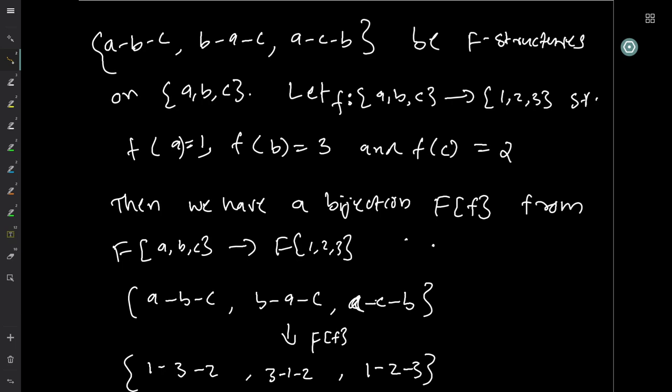Looking at examples of paths: A-B-C is a path, B-A-C is a path, A-C-B is a path — these are F-structures on the set {A, B, C}. Suppose we have a bijection f mapping {A, B, C} to {1, 2, 3}, where f takes A to 1, B to 3, and C to 2.